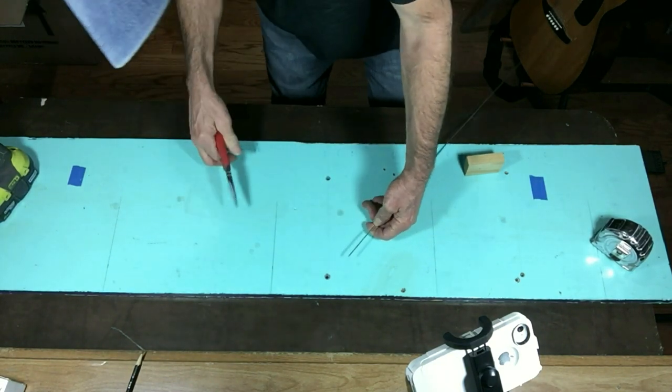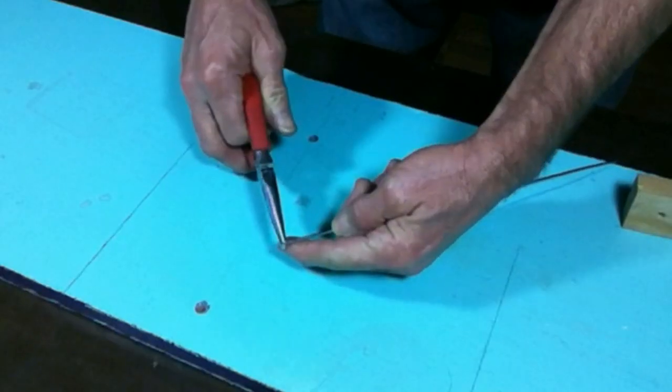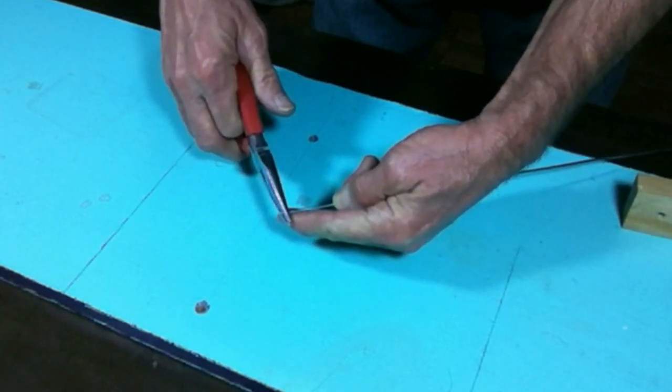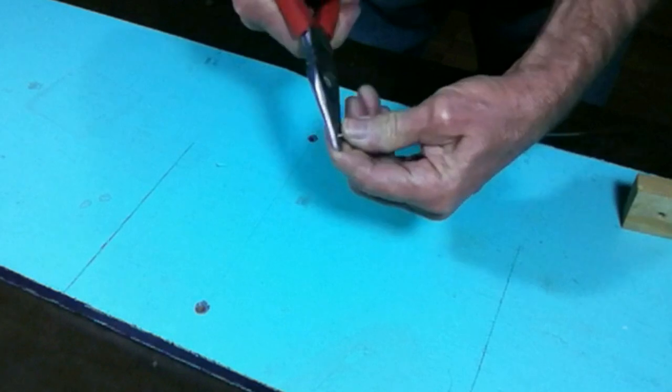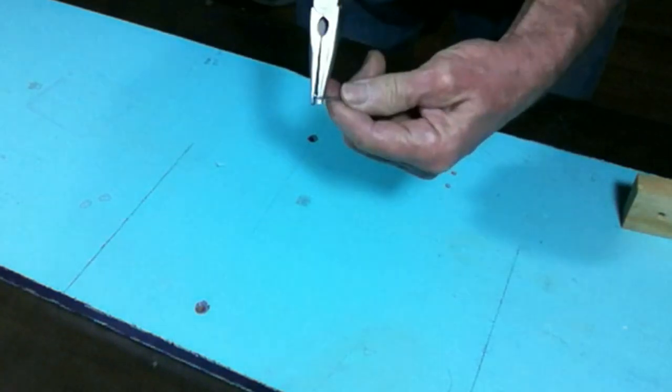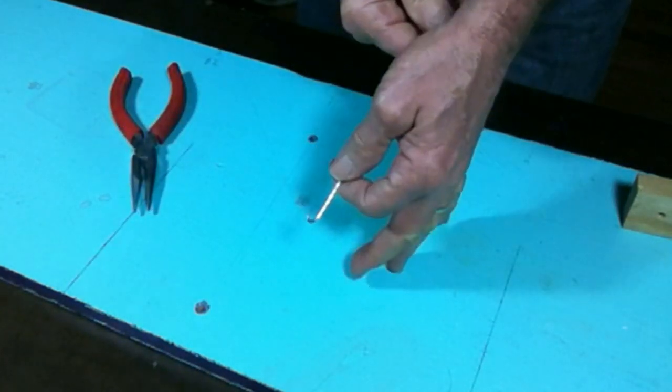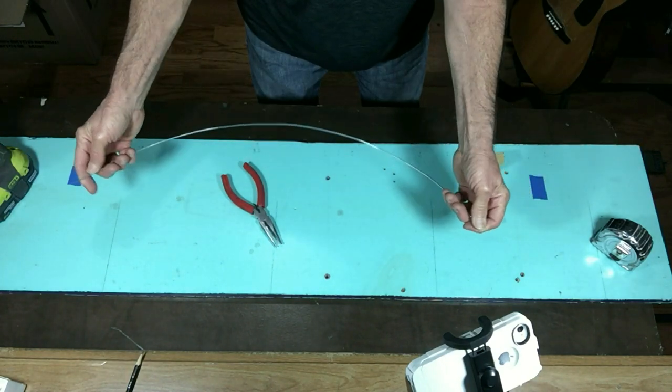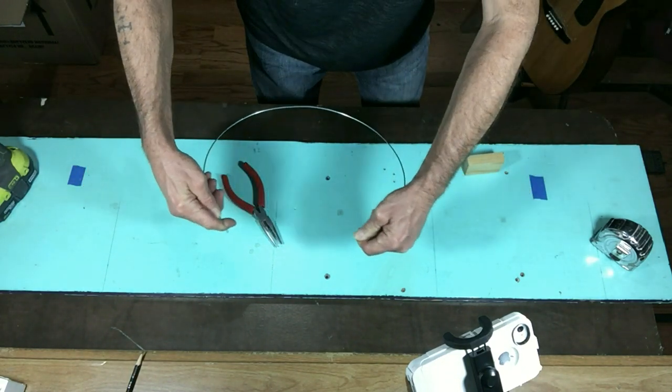Now the first thing I'm going to do is go ahead and bend the ends nice and sharp where they are going to screw onto the base. Now I'll bend it all the way around into a circle.